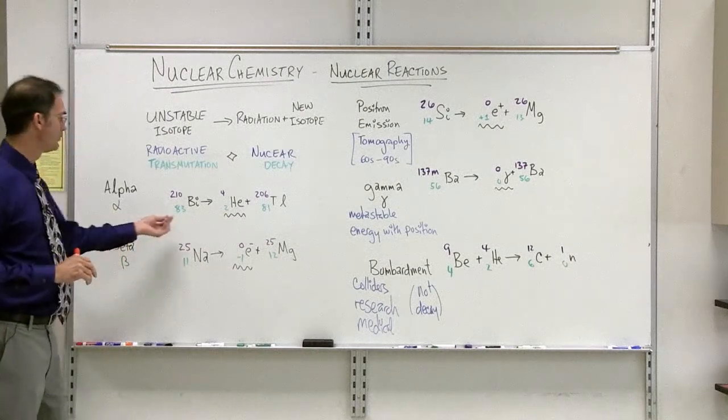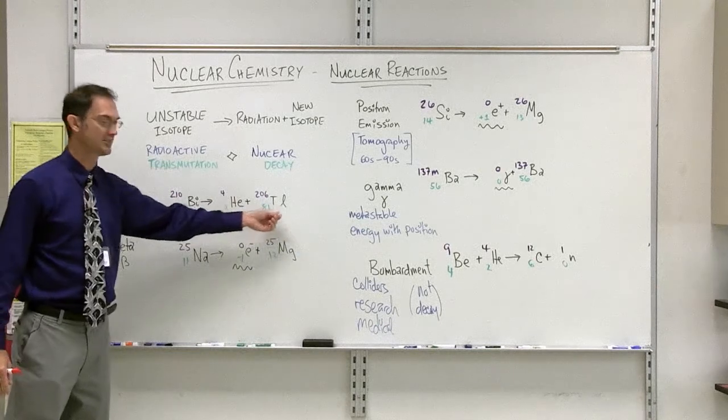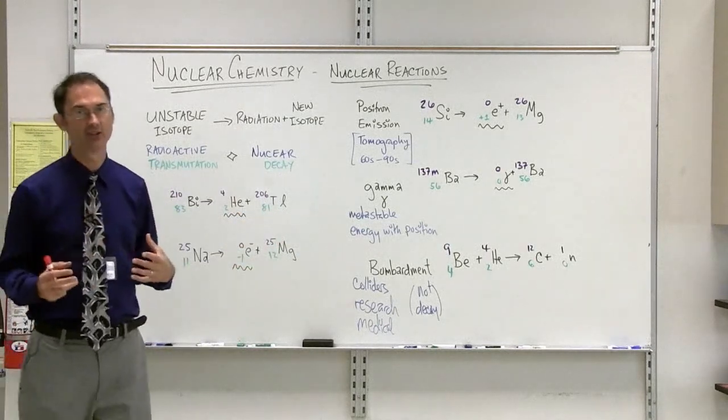So if you begin with bismuth, it will naturally decay to an alpha particle, a helium nucleus, plus thallium. That is alpha decay.